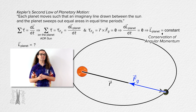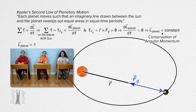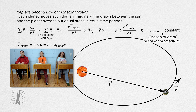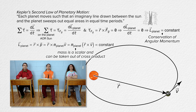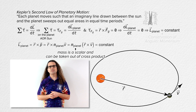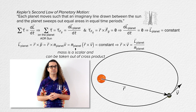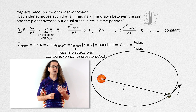Bobby, please determine the angular momentum of the planet, which we now know is constant. Angular momentum equals the cross product of the r position vector and linear momentum. Linear momentum equals mass times velocity. So the angular momentum of a planet with the axis of rotation at the center of the sun equals the mass of the planet times the cross product of the planet's r position and velocity. Correct, Bobby. And we can rearrange that to get that the cross product of the r position vector and the velocity of the planet equals the angular momentum of the planet divided by the mass of the planet.